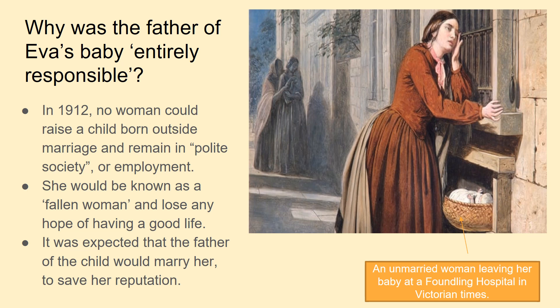In terms of understanding the context, you need to understand gender roles in those times, particularly when it came to parenting. In 1912, no one could raise a child born outside of marriage and remain in polite society or employment. Polite society is basically a nice way of saying that people would shun you. If you became an unmarried mother, you would be known as a fallen woman and basically lose your reputation as a respectable person, and any hope of a good life would be gone. So it was expected that the father of a child would marry the woman because he had 'gotten her into trouble' — the kind of expression people would use — to save her reputation.